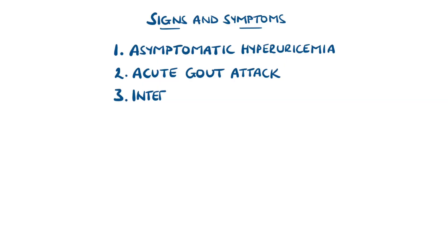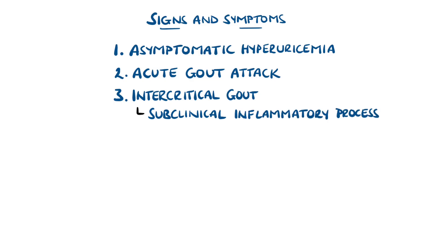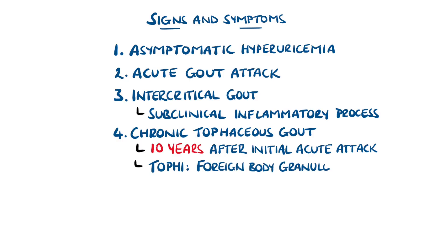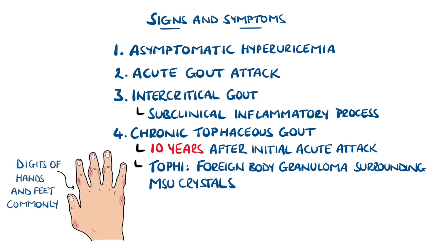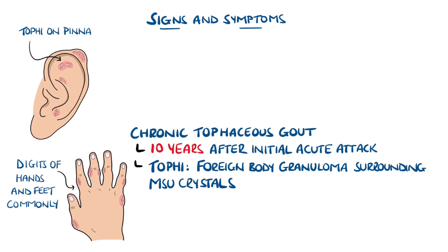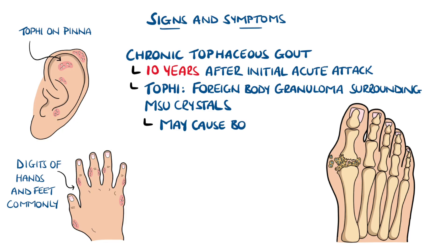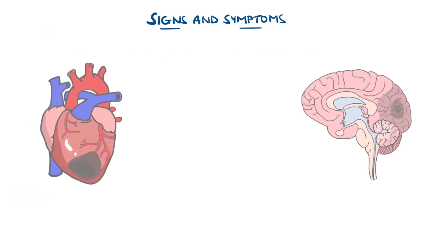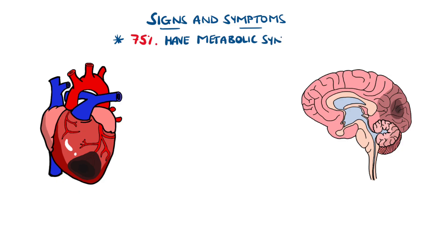Then is the intercritical period, where there may be some lingering pain, but in most cases the pain resolves while there is still an ongoing subclinical inflammatory process. Chronic tophaceous gout is a stage that frequently occurs after 10 years have passed since the acute attack. Over time, there is granuloma formation around the deposited monosodium urate crystals, clinically found as pale subcutaneous nodules, most commonly on the digits of the hand and feet, but can even happen on the pinna of the ear. These can lead to bone destruction and deforming arthritis. It's also important to note that 75% of people with gout also have metabolic syndrome and are therefore at higher risk for cardiovascular disease.